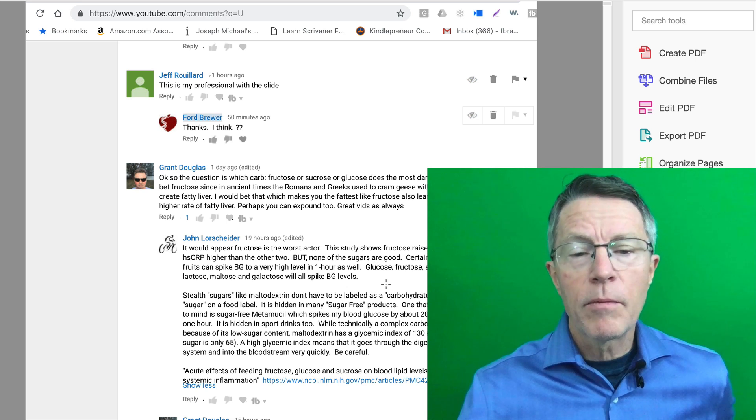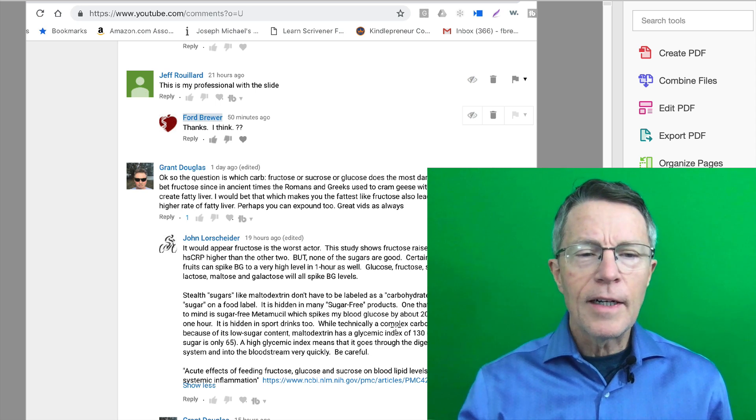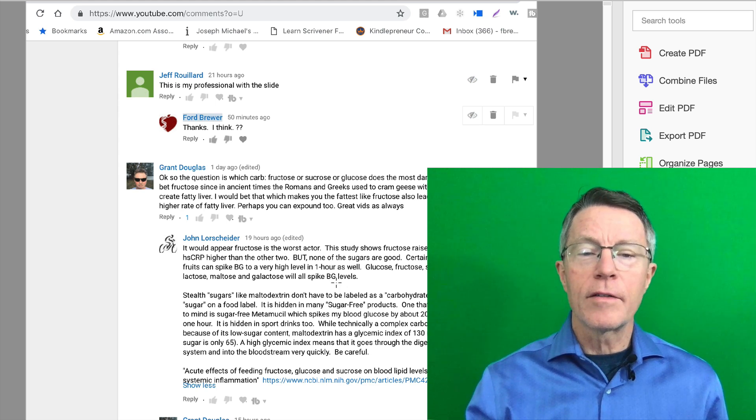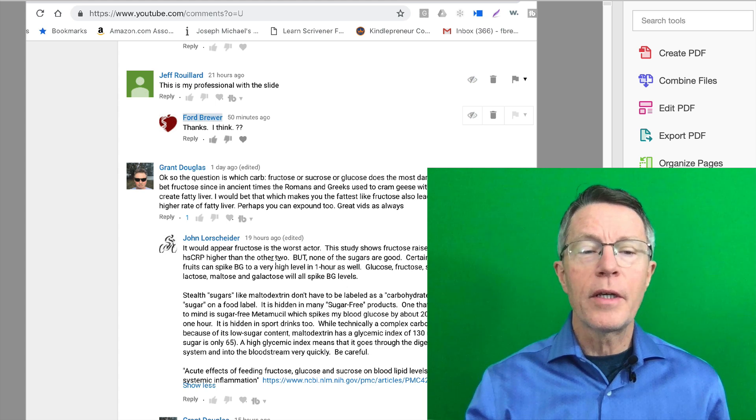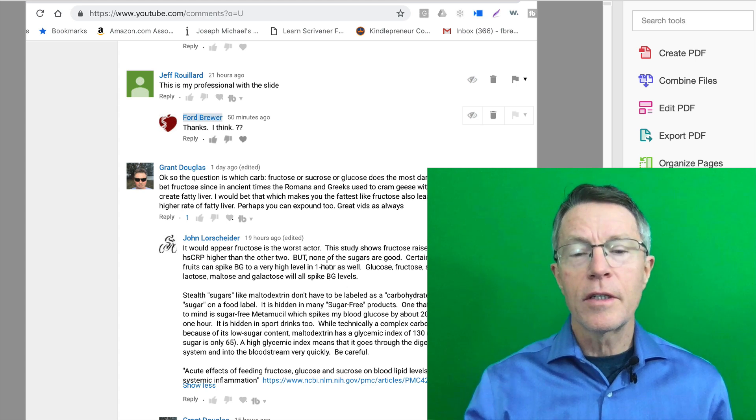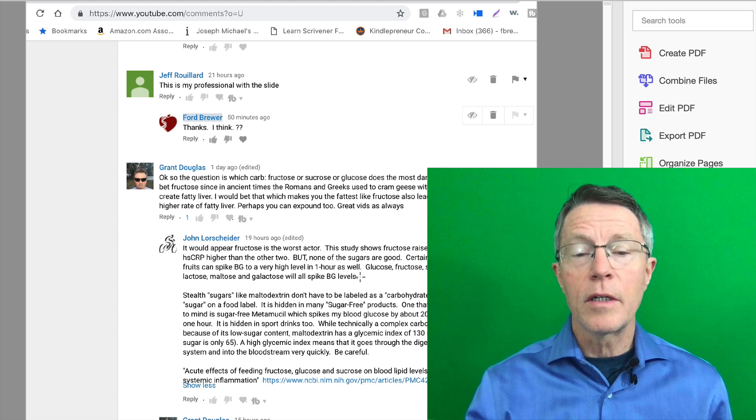Now John, as he usually does, came up with some very interesting research. He said it would appear fructose is the worst actor. This study shows fructose raises LDL and CRP, C-reactive protein, higher than the other two, but none of the sugars are good. Certain whole fruits can spike blood glucose to a very high level in an hour, less than an hour as well.